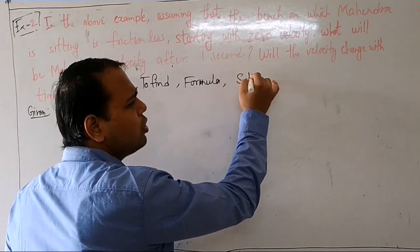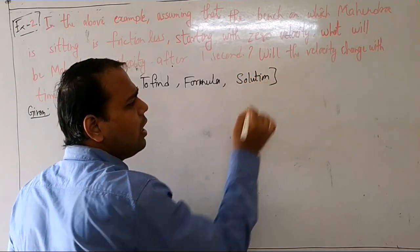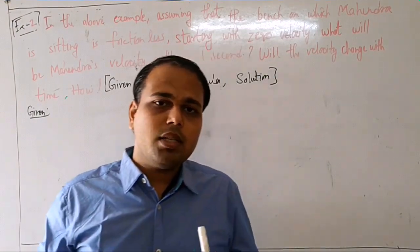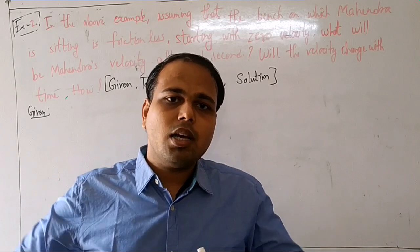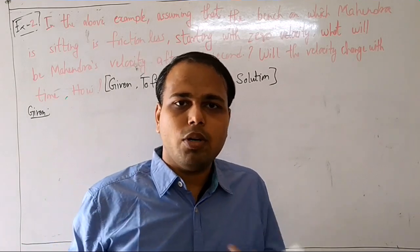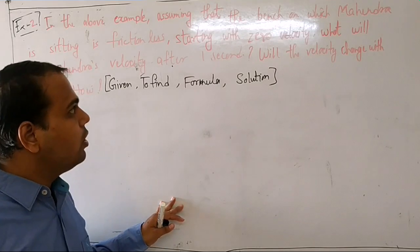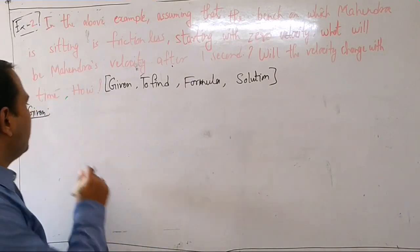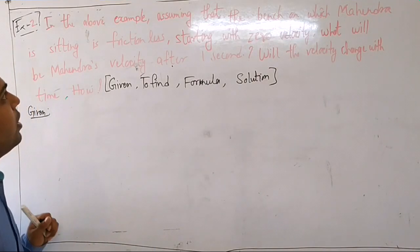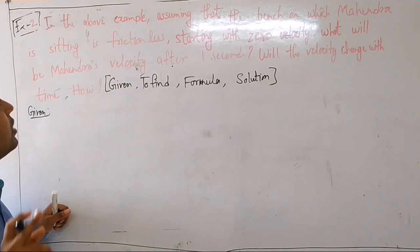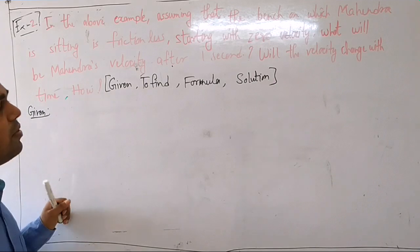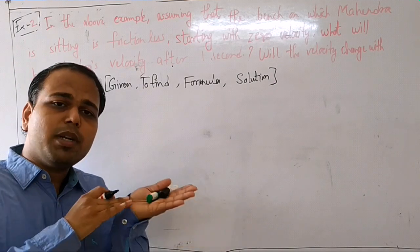The values can be substituted into the formula and the solution can be found. You will have to solve the numerical. In physics or chemistry, students are often scared, especially in physics. So when we come to the numerical, first write down the given values. In the above example, assuming the bench on which Mahendra is sitting is frictionless — meaning it is a frictionless surface.